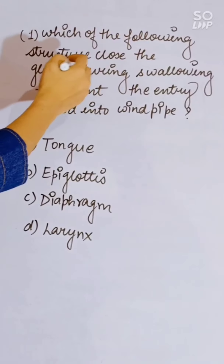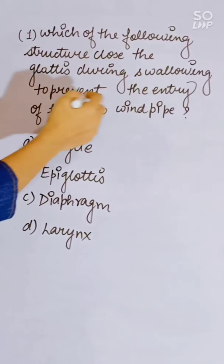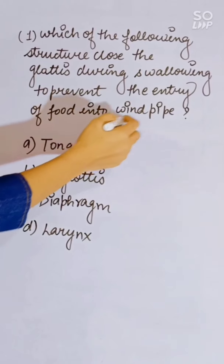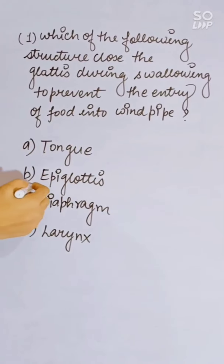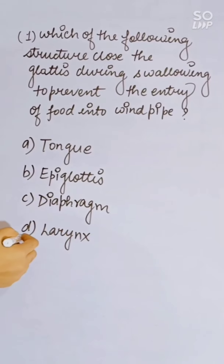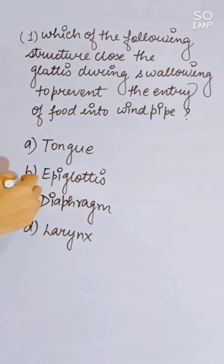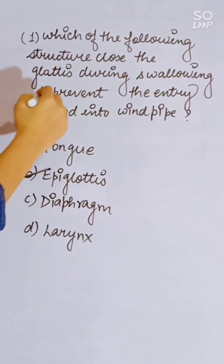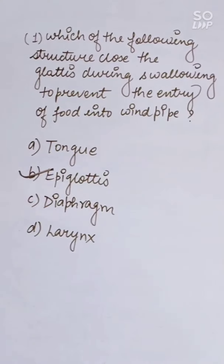Which structure closes the glottis during swallowing to prevent entry of food into the windpipe? Options: tongue, epiglottis, diaphragm, or larynx. Correct answer is epiglottis, which prevents entry of food into the windpipe.